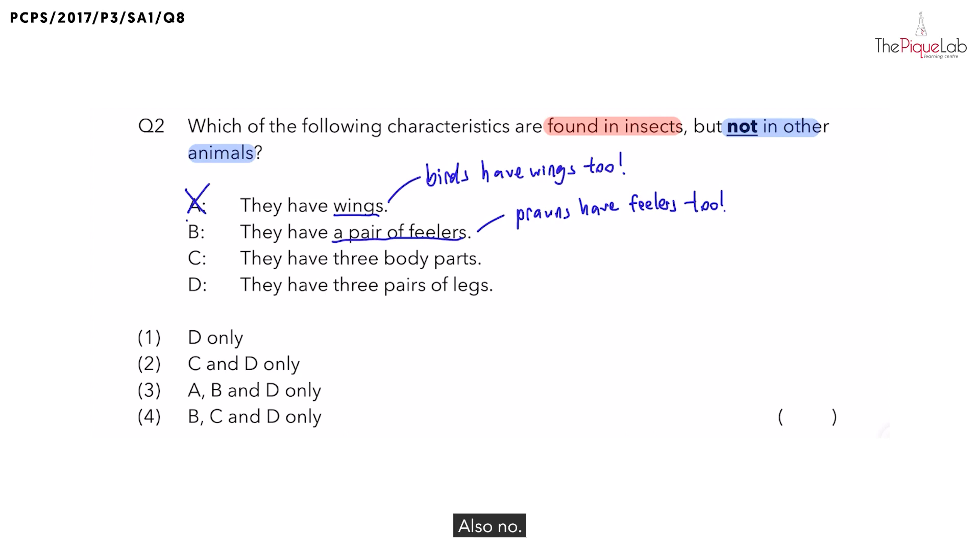Next, let's take a look at C. They say that insects have three body parts. Now is this found in any other animals? No. So because of that, can I choose C as my answer? Yes, so let's put a tick.